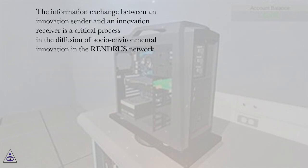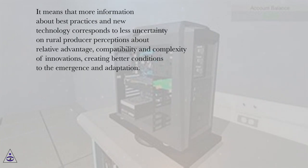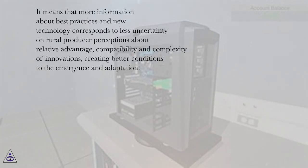The information exchange between an innovation sender and an innovation receiver is a critical process in the diffusion of socio-environmental innovation in the Rindris network. More information about best practices and new technology corresponds to less uncertainty in rural producer perceptions about relative advantage, compatibility, and complexity of innovations, creating better conditions for emergence and adaptation.